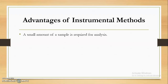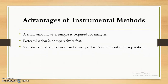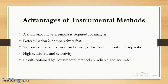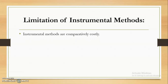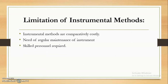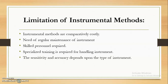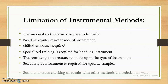The advantages of instrumental methods are: small amount of sample is required for analysis; determination is comparatively fast and requires very less time; various complex mixtures can be analyzed with high sensitivity and selectivity; and results obtained are reliable and accurate. The disadvantages are: instrumental methods are costly; regular maintenance of the instrument is needed; a skilled person and specialized training are required for handling the instrument; and sensitivity and accuracy depend upon the type of instrument. Selectivity of instrument is required for specific samples.